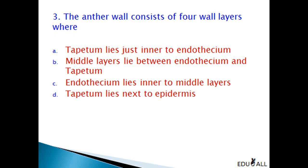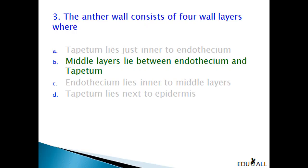The anther wall consists of 4 wall layers where Tapetum lies just inner to endothesium. Middle layer lies just between the endothesium and Tapetum. Endothesium lies inner to middle layers. Tapetum lies next to epidermis. We know that the first layer is epidermis, beneath which we have endothesium, then 3 to 4 layers of parenchyma cells called the middle layer, and beneath the middle layer we have Tapetum. Hence, the right answer is B — middle layer lies between endothesium and Tapetum.